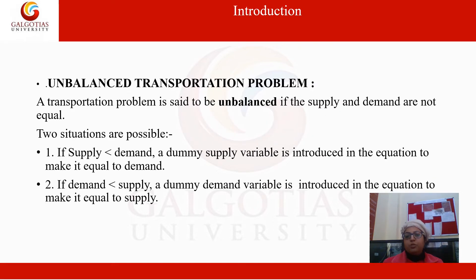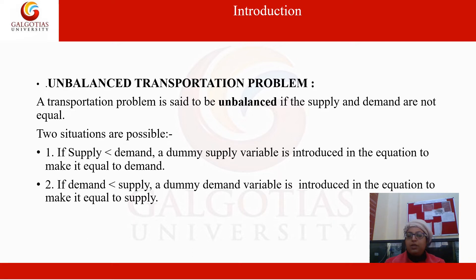A transportation problem is said to be unbalanced if supply and demand are not equal. Two situations are possible. First, when supply is less than demand, a dummy supply variable needs to be introduced in the equation so that demand and supply can be made equal. Second, when demand is less than supply, a dummy demand variable is introduced in the equation to make it equivalent to the supply.